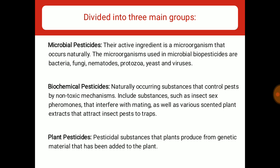jo ki insect pest ki growth and reproduction ko inhibit karte hain. Plant pesticides are pesticidal substances that plants produce from genetic material that has been added to the plant. For example, Bt cotton, jismein hum plants ke andar Bacillus thuringiensis se isolate ki hui gene ko insert karate hain, jiske wajah se plant khud mein capable ho jaata hai pesticidal protein banane ke aur resistance show karta hai against a particular pest.